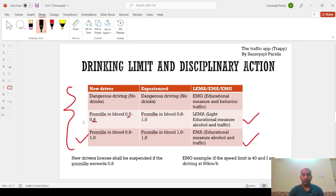So, these two are related to if you are drinking and driving, but for example, if you are driving recklessly, if the driving is not proper, then it is labeled as dangerous driving. And for a new driver to do a dangerous driving or an experienced driver, then educational measure, behavior and traffic, that is EMG can be imposed.